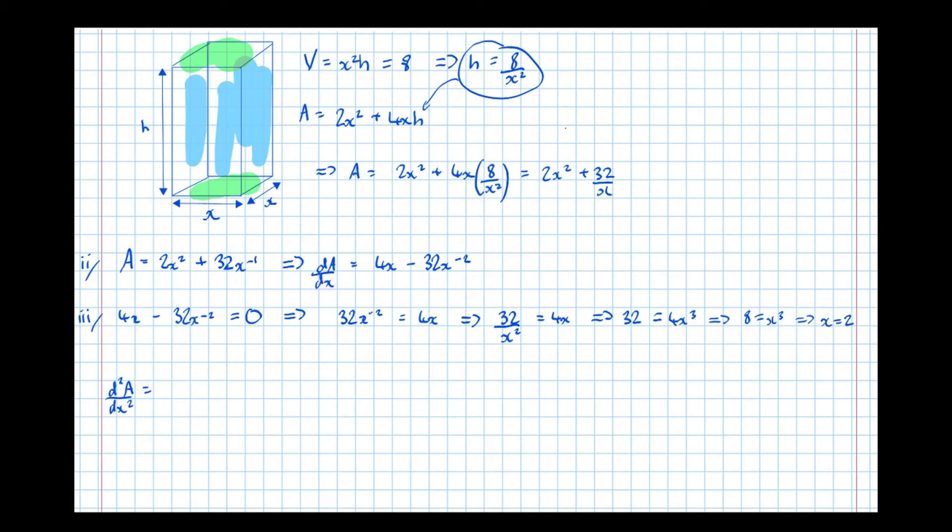Well that's equal to, if we differentiate this expression here again, we get d2A by dx squared equals 4, then minus 2 times 32 is positive 64, x to the power of minus 3. So that means that when x equals 2, i.e. at the minimum surface area, this implies that d2A by dx squared equals 4 plus 64 to the power of minus 3 equals, we'll put in the calculator, we get 12.